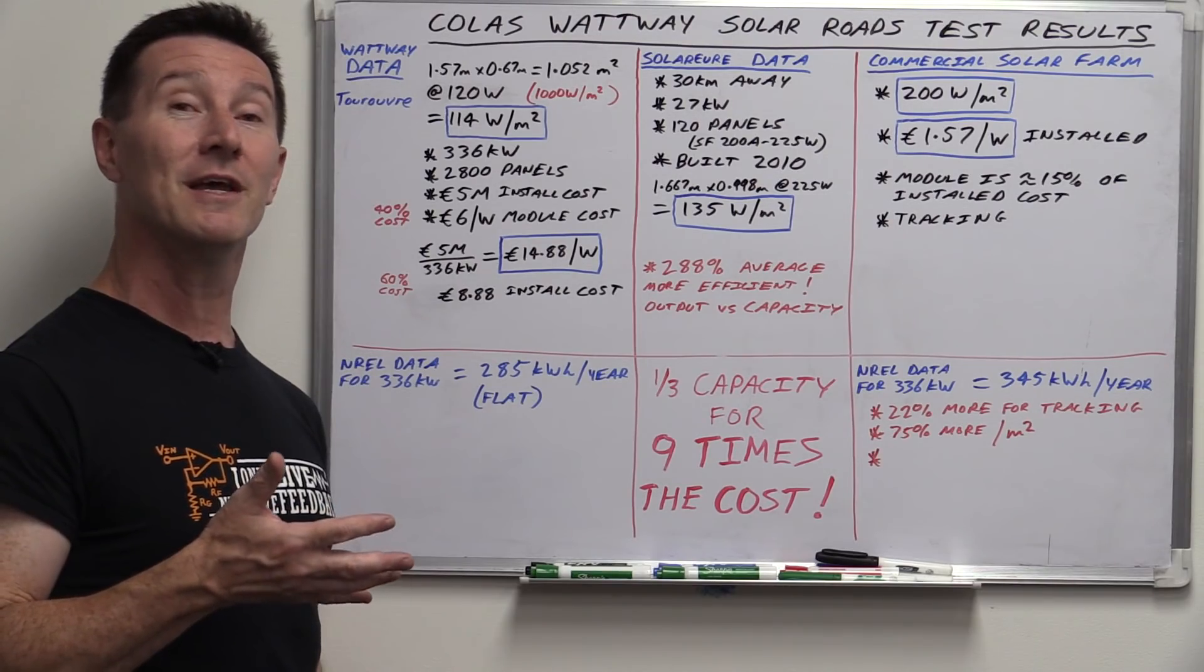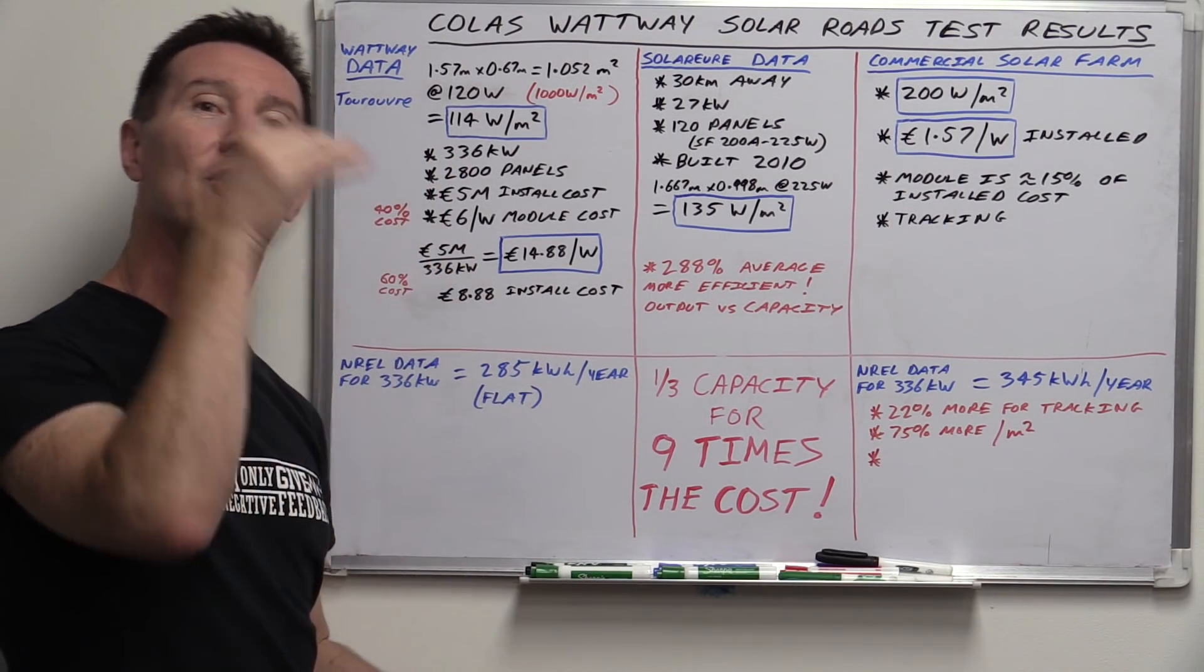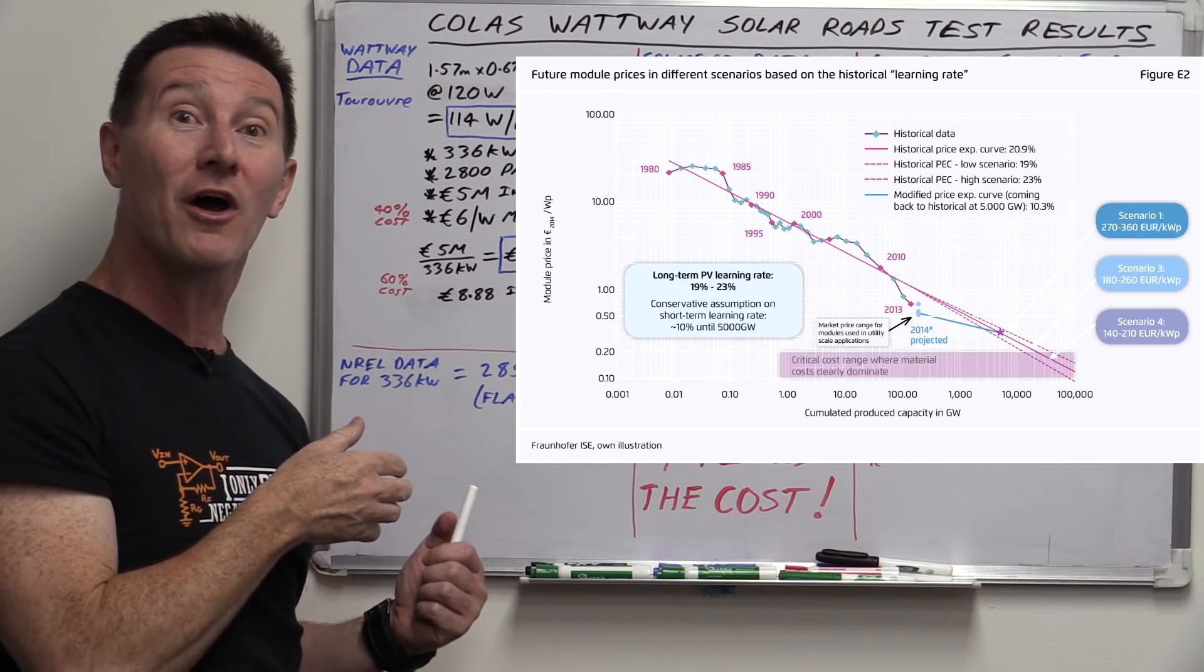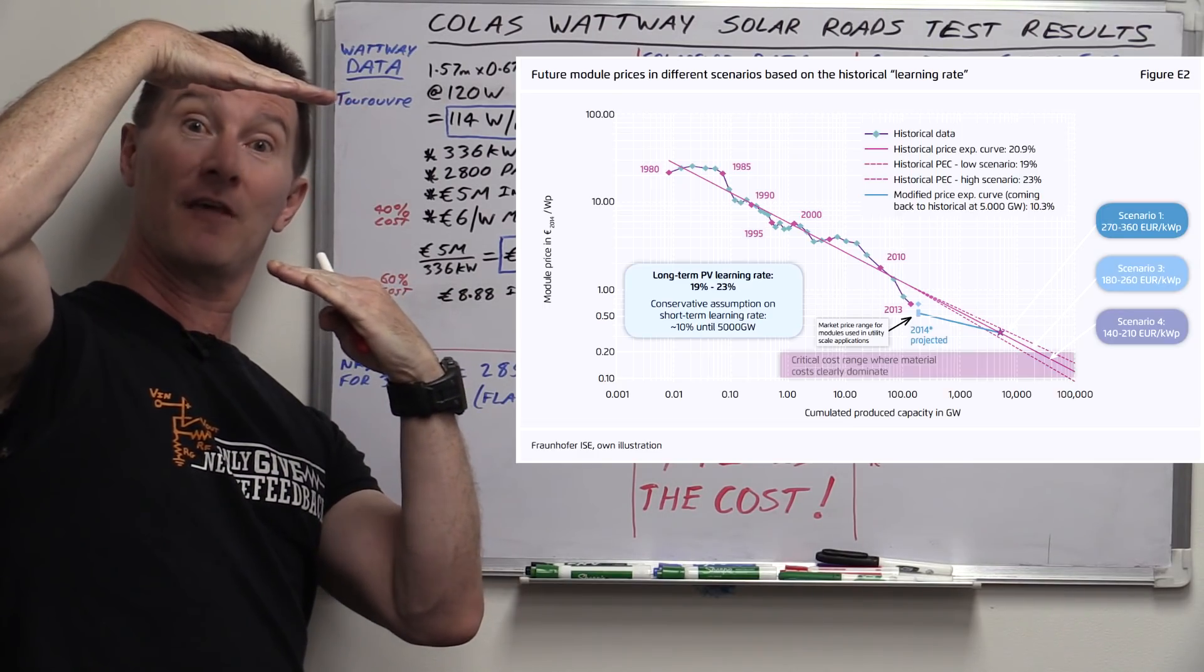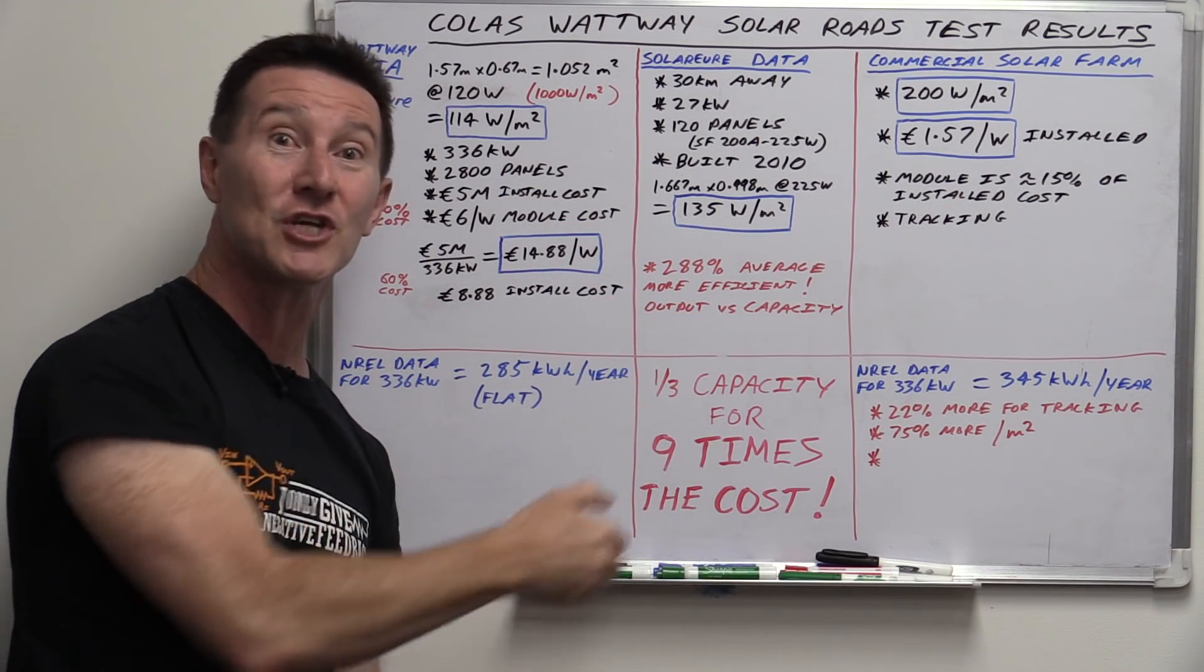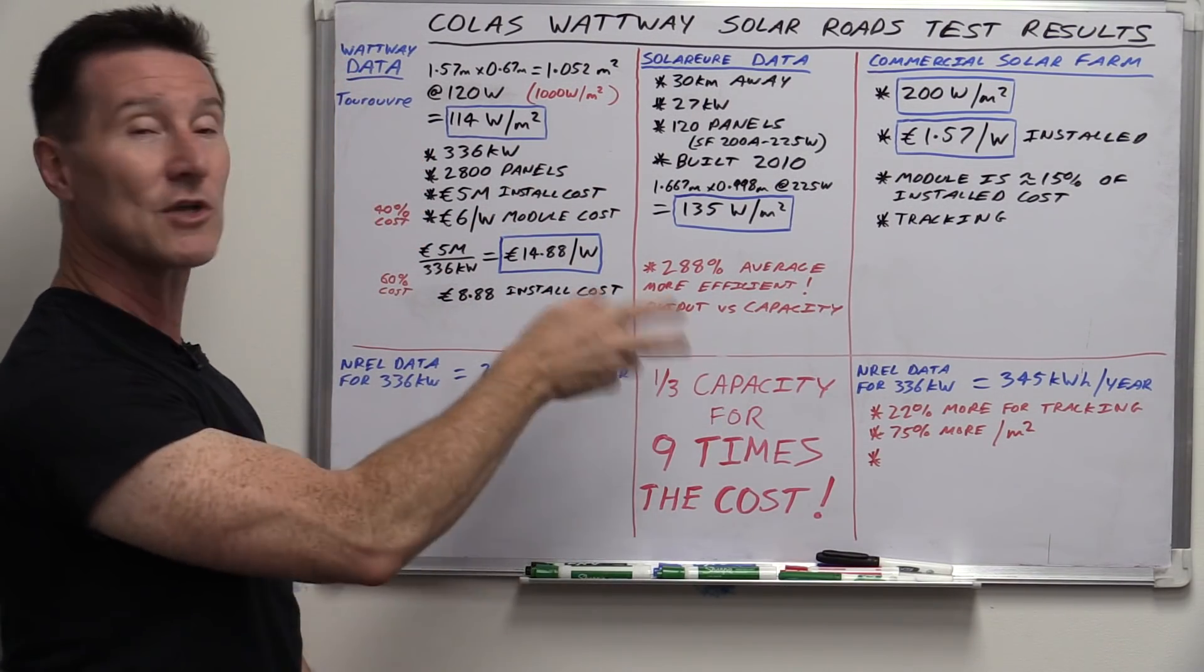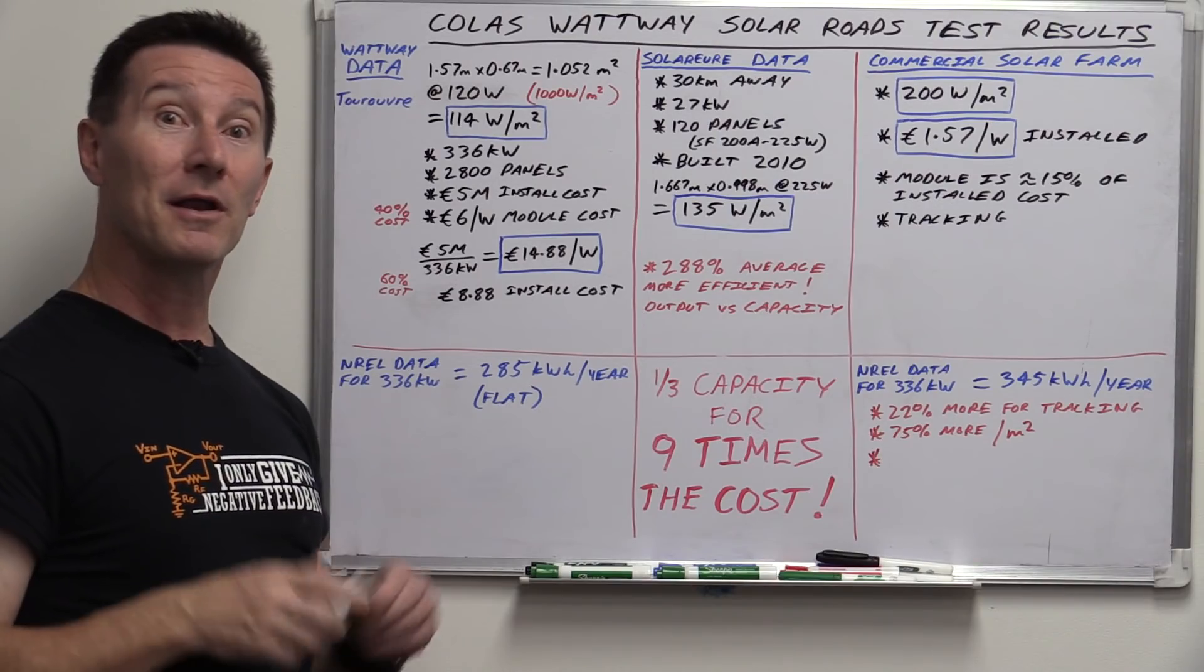It has absolutely no chance of catching up to commercial solar technology. And this is the thing that a lot of the solar roadways fanboys keep wanting to talk up. Oh, but as the technology gets better and better, the cost is going to go down and down and down. Yeah, well, so is the cost of commercial solar farms. They have been since day dot. And basically, if it's already twice the size up here, even if they follow a linear trajectory down, it's still going to be twice the cost in the future. Just for the module, let alone installed and everything, it's going to be multiple times the cost of commercial solar farms. It'll never, ever get down to the same cost. Not even close.